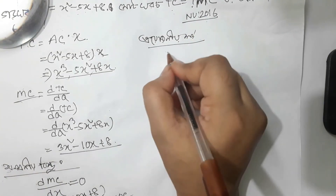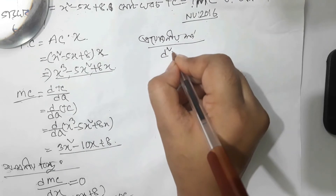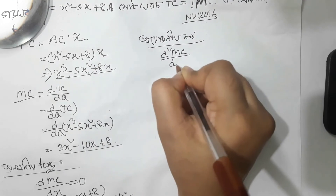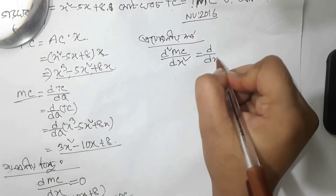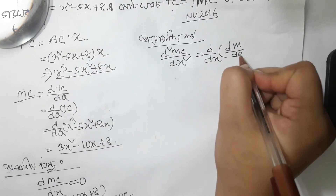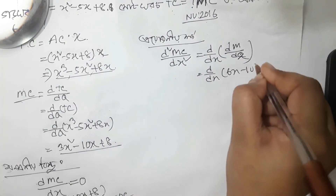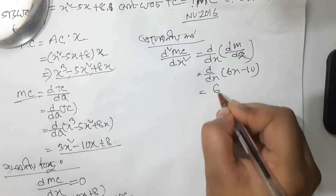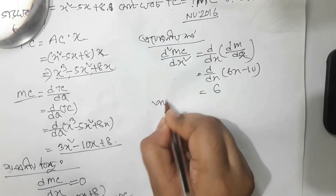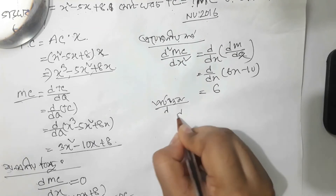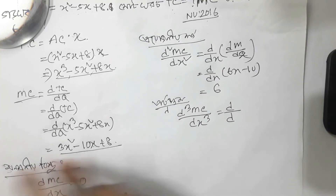I am going to write d squared, d squared MC, then dx squared. Then d/dx — so we are using x, dm/dx — so we will give 6x minus 10. So we can give 6x, so we will give the 3x.